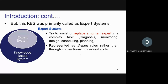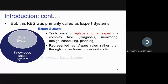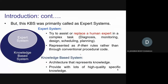The expert system is simply if-then rule-based: 'if' is the condition, 'then' is the solution. Whereas a knowledge-based system has an architecture that represents knowledge — it thinks just like a human to solve a particular task. That is the advantage with KBS: it provides a lot of high-quality specific knowledge and produces the best quality solutions for problems.